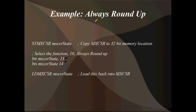Here's another example - round up. If we want to always round up, so even something like 0.00001 would be rounded upwards to 1 when we cast, this is function 1, 0. Again, we store MXCSR to a 32-bit memory location. This time we want to set bit 13 to 0 using BTR, but for bit 14 we use BTS - bit test and set - with MXCSR state and 14. Then you load that altered MXCSR state back into the real MXCSR register, and that'll always round up from then on when you cast.